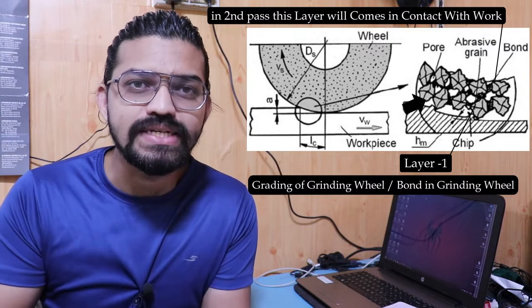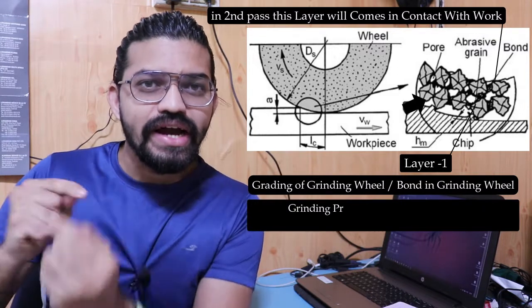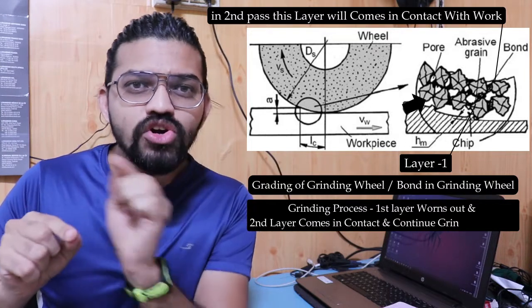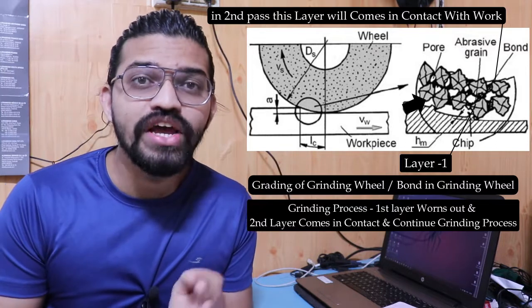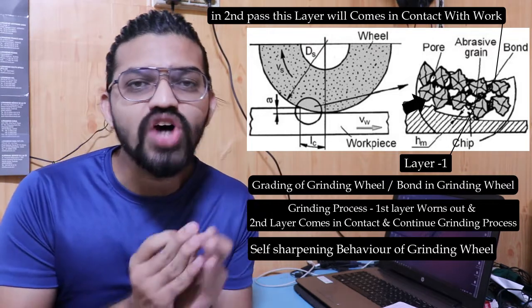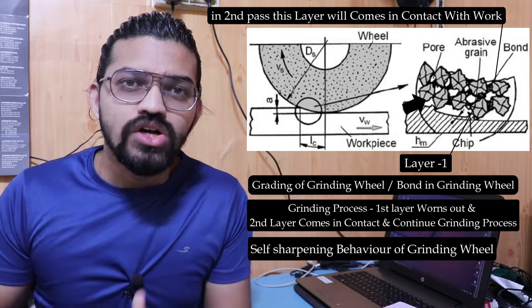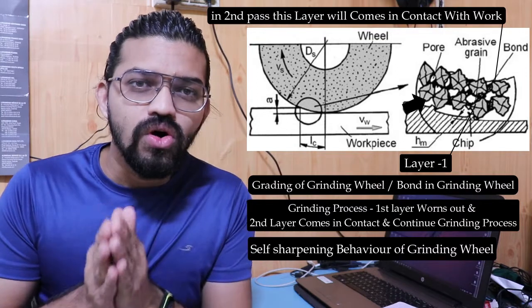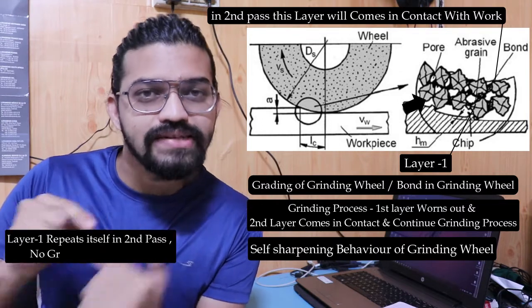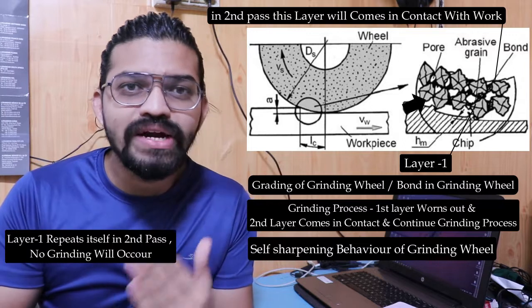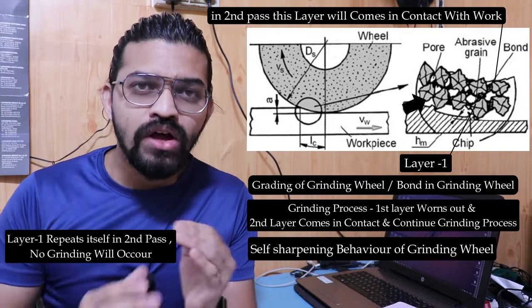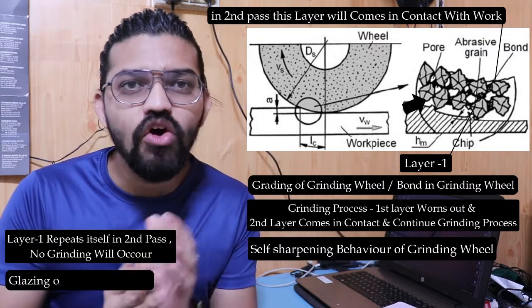When the first layer of abrasives wears out and the second layer comes in contact with the workpiece, this phenomenon is called the self-sharpening behavior of the tool. If the first layer repeats itself in the second pass as well, material won't be removed and machining won't occur.